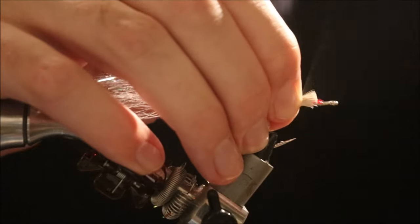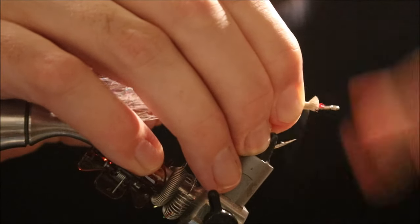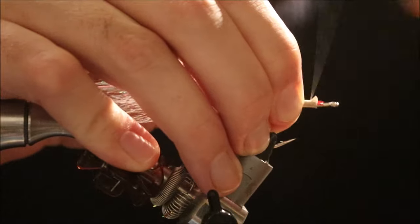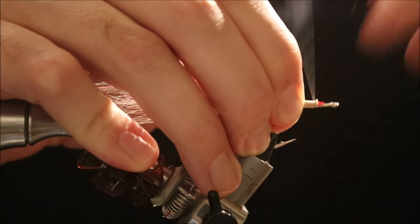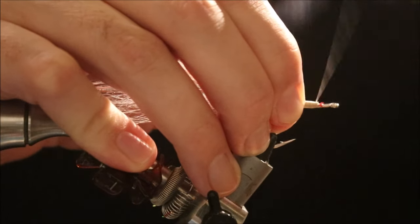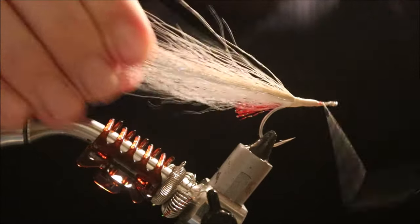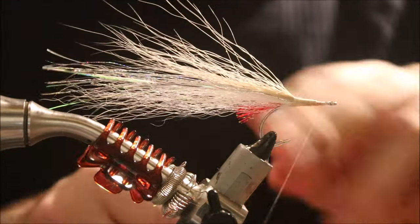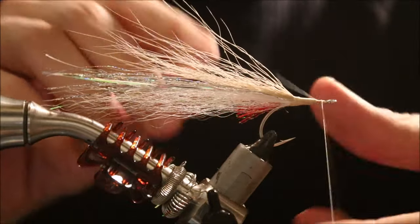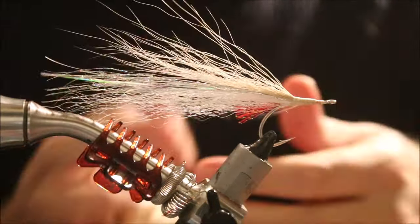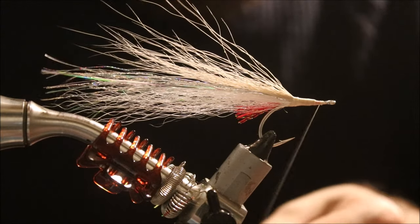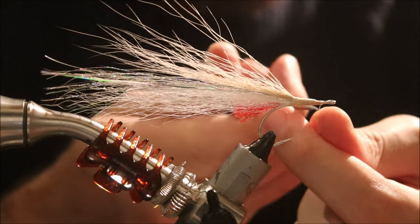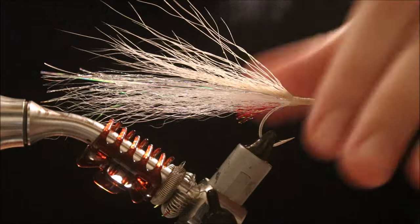And then just tidy everything up. Nice, tight wraps to secure everything. And create a nice, smooth base for the foam head. Quick whip finish. Three turns will do. This is going to be sealed inside the body.